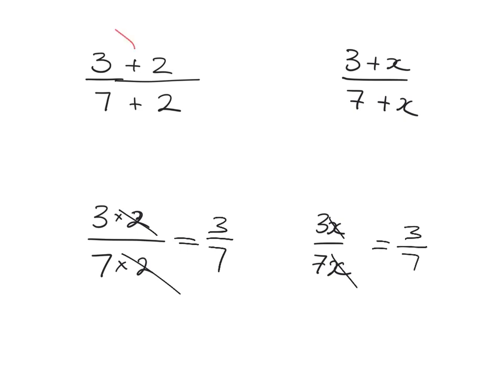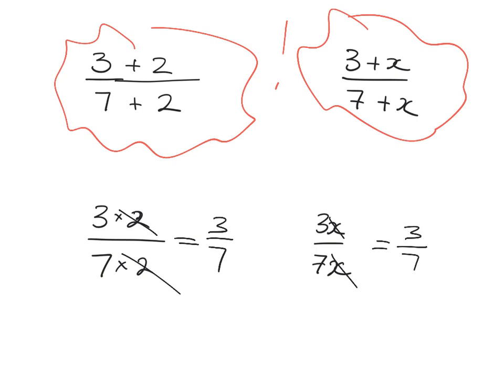Addition and subtraction are dangerous — they don't work nicely. Three-sevenths is just a bit smaller than a half. Adding 2 to the top gives 5, and adding 2 to the bottom gives 9 — but five-ninths and three-sevenths are not the same thing. You cannot simply cancel the 2s. In algebra, if you have 3 plus x over 7 plus x, you cannot cancel those x's — the plus sign makes it a problem. You must be very careful: you cannot cancel when you have addition at the top and the bottom.